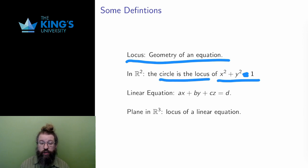A linear equation in three variables is any equation of the form ax plus by plus cz equals d for constants a, b, c, and d. A plane in R3 is always described as the locus of a linear equation. So to describe planes in R3 is to write down the correct linear equations for them.